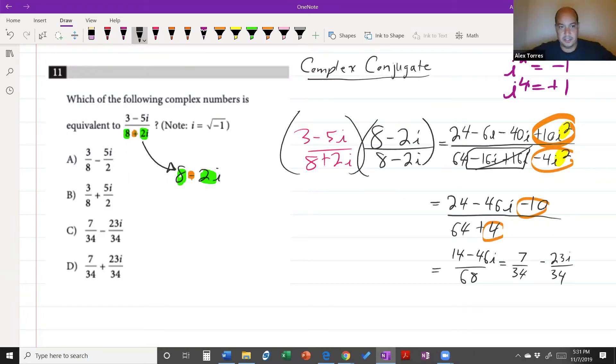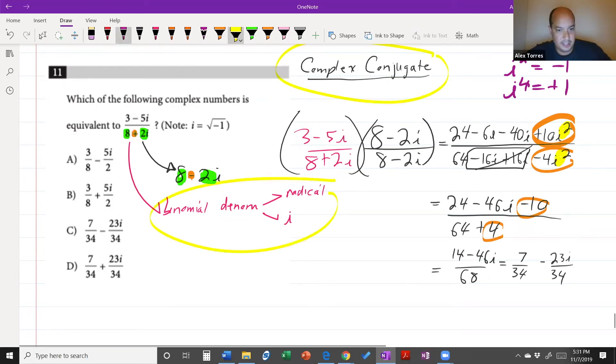Just a couple of little notes to make here. When you have a binomial in your denominator that's going to have either a radical in it or an i imaginary number in it, that's where you're going to use the complex conjugate. Now, what is the complex conjugate? It's the idea that